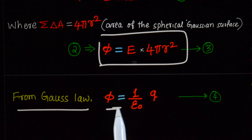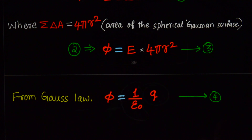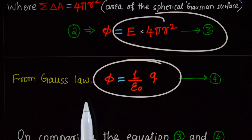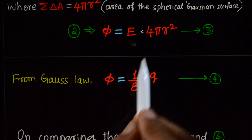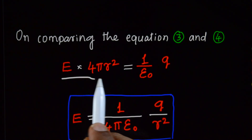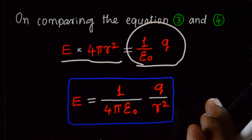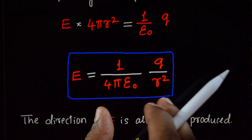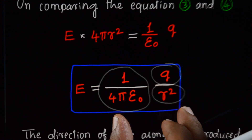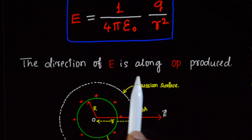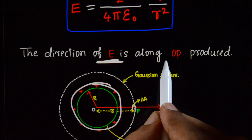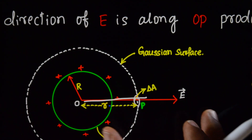From Gauss's law, flux equals 1 by epsilon naught times the total charge Q — equation 4. Comparing equation 3 and equation 4: E times 4πr² equals 1 by epsilon naught times Q. Rearranging, E is equal to 1 by 4πε₀ times Q divided by r². This is the electric field at point P due to the uniformly charged spherical shell, and the direction of electric field E is along OP.